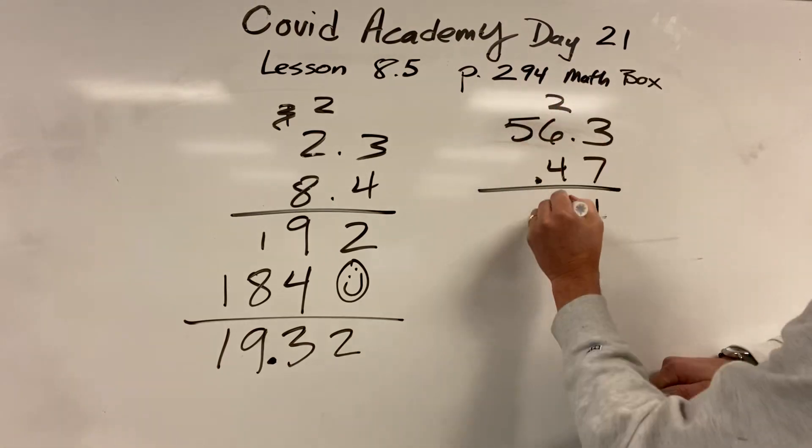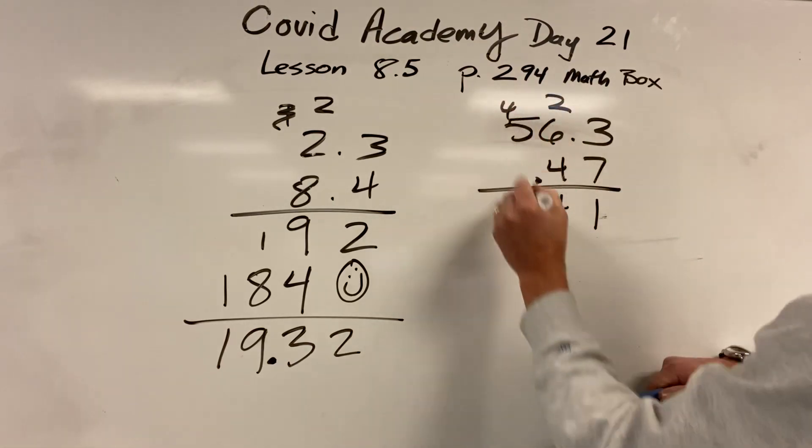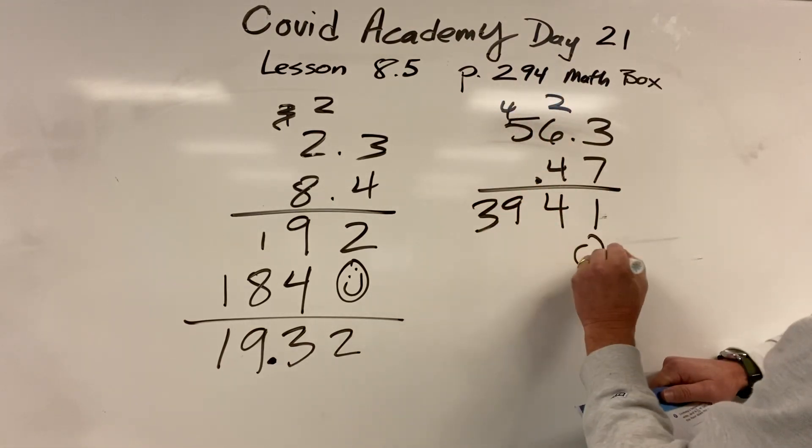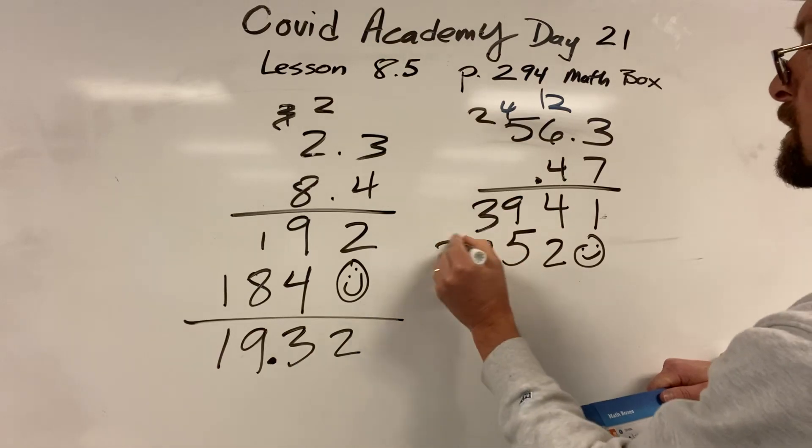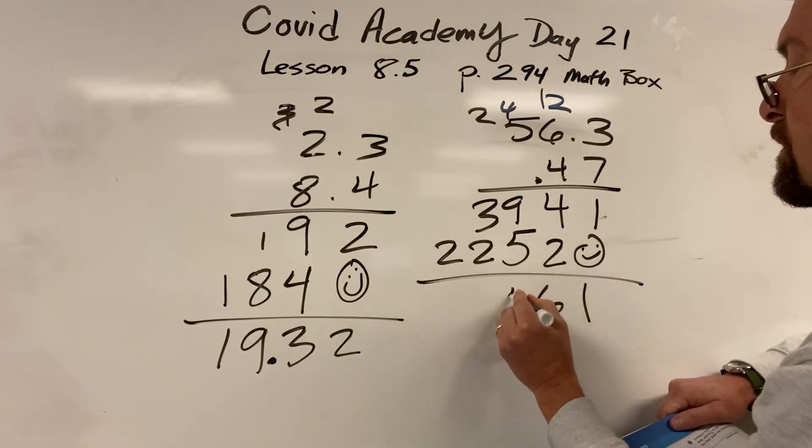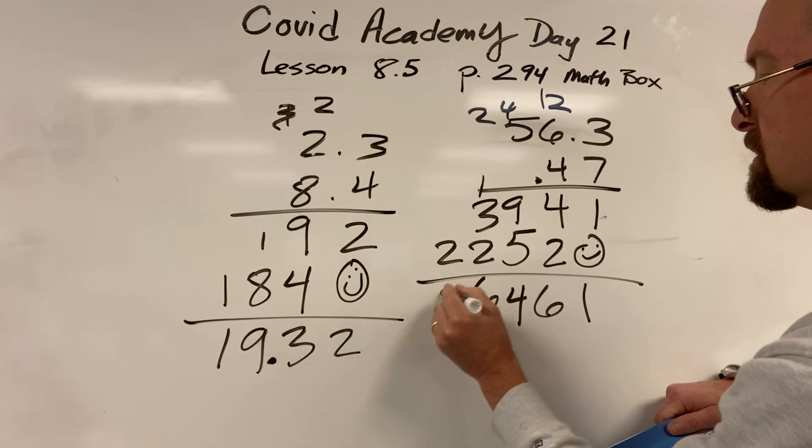4 times 3 is 12. 4 times 6 is 24. 4 times 5 is 20. 7 times 3 is 21. 7 times 6 is 42. 7 times 5 is 35. Did you get that? Did you get that?